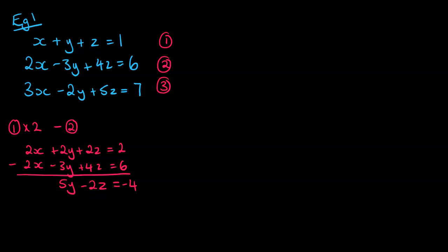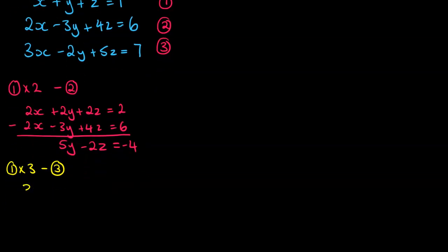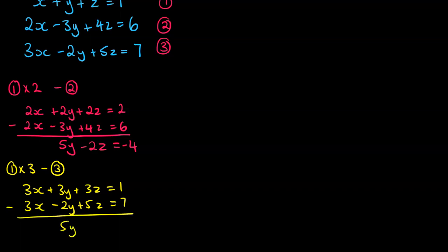Now, I need to do the same with another pair of equations, so I'm going to do number 1 times by 3, take away number 3. And with that one, we end up with... So we'll get 3x, 3y, 3z equals 1. And then I'm going to put the other one underneath just to make things a little easier. And if we do that subtraction, you'll see that we come out with 5y minus 2z equals minus 4. Again, the same as what we had before.